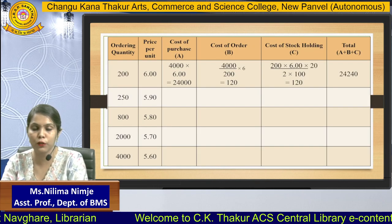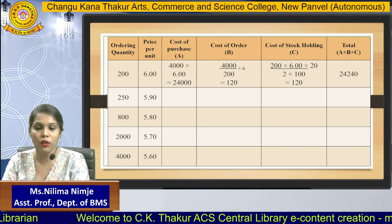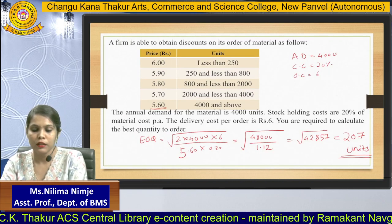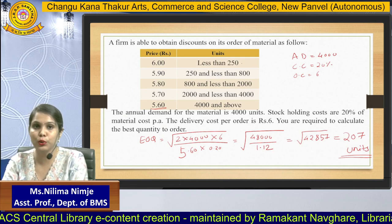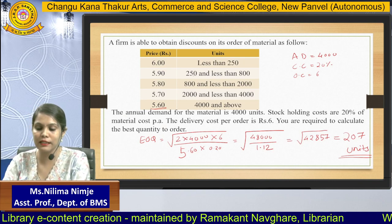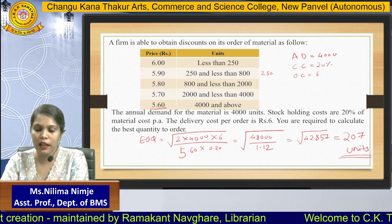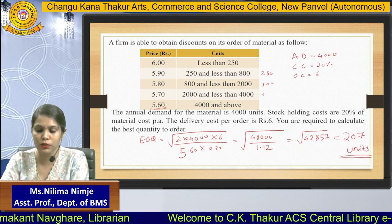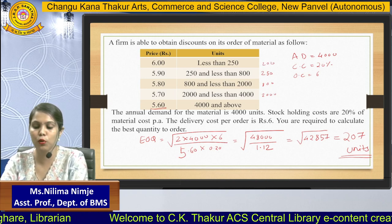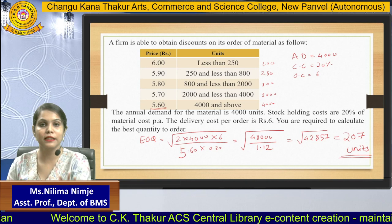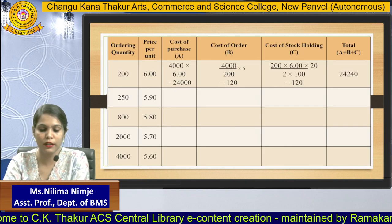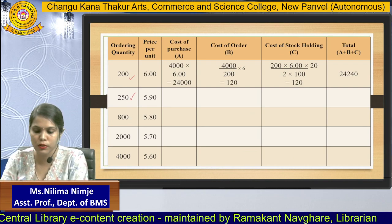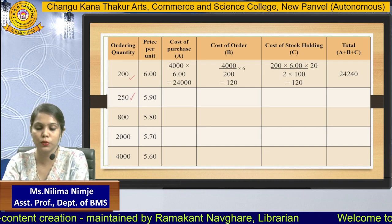A comparison table is set up with ordering quantities at each price break: 200 (price ₹6), 250 (price ₹5.90), 800 (price ₹5.80), 2,000 (price ₹5.70), and 4,000 (price ₹5.60). Each price was given in the question. The table splits costs into three columns: purchase cost, ordering cost, and carrying cost.